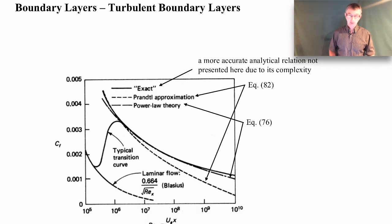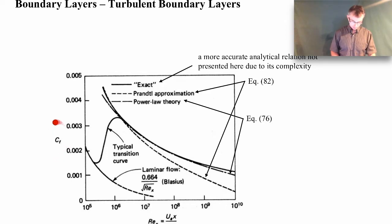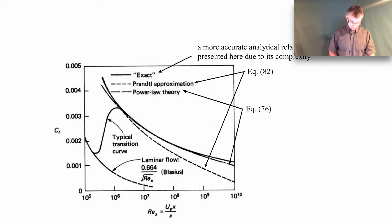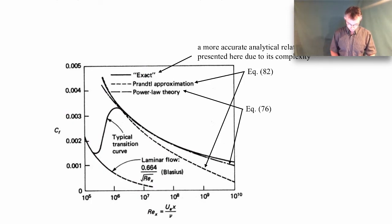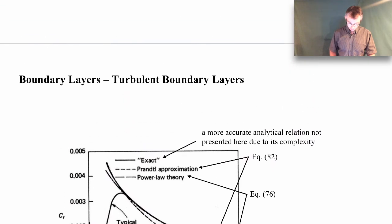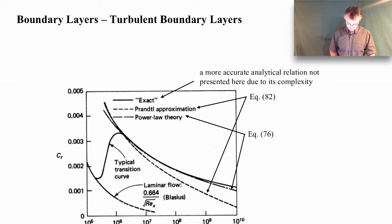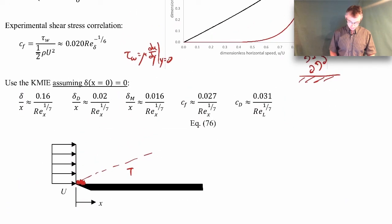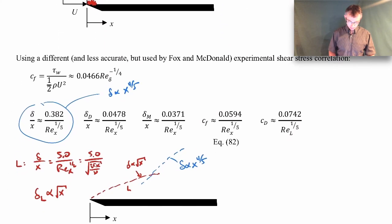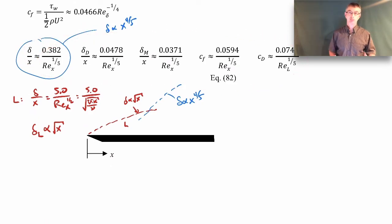Here's a comparison showing friction coefficient as a function of Reynolds number. The curve for laminar flow is from the Blasius solution, then there's a transition before going turbulent. For the turbulent case, there's an exact solution treated as the real value (solid black line). The equation used in this course (equation 82) is less accurate and doesn't follow the real behavior well at higher Reynolds numbers. Equation 76, the dot-dash line from the more accurate fit, follows it better — but we'll stick with the textbook expressions.